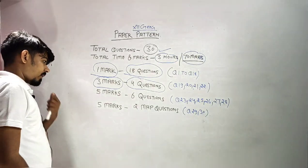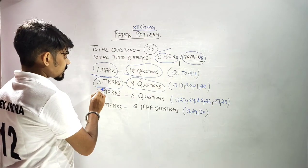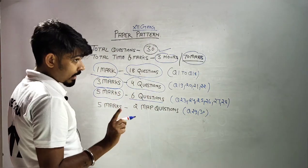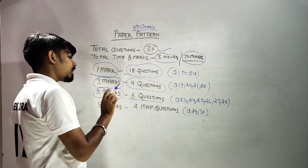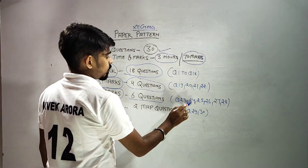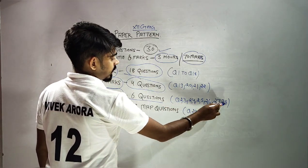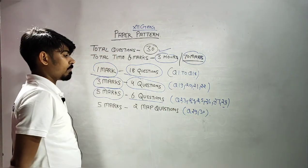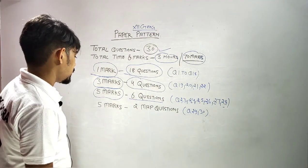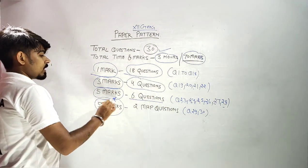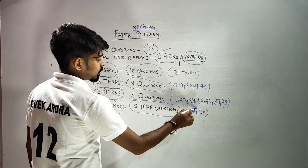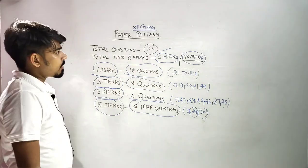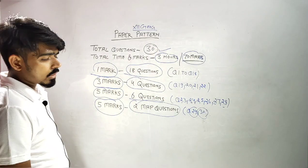3 marks वाले questions के बाद, 5 marks के कुल 6 long questions हैं। ये heading और explanation वाले questions हैं। Question number 23, 24, 26, 27, 28 — कुल 6 questions, 5 marks प्रत्येक। इनमें से आप skip भी कर सकते हैं। और 5 marks के 2 map questions होंगे: Question number 29 और 30।